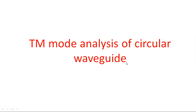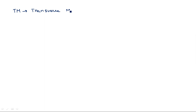In this video I am going to explain TM mode analysis of a circular waveguide. TM stands for transverse magnetic. In transverse magnetic mode, the magnetic field does not exist in the z-direction but the electric field does — so Ez is not equal to zero and Hz is equal to zero.